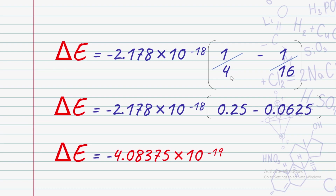1 over 4 equals 0.25, and 1 over 16 equals 0.0625. So the change of energy equals minus 4.08375 times 10 raised to minus 19.